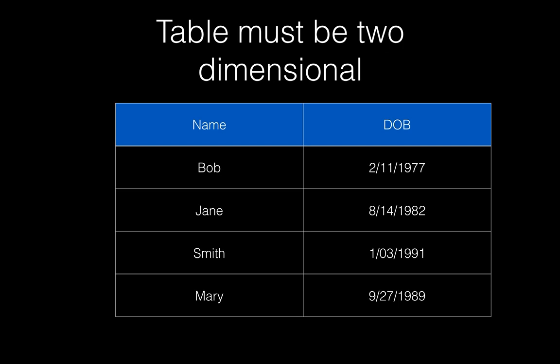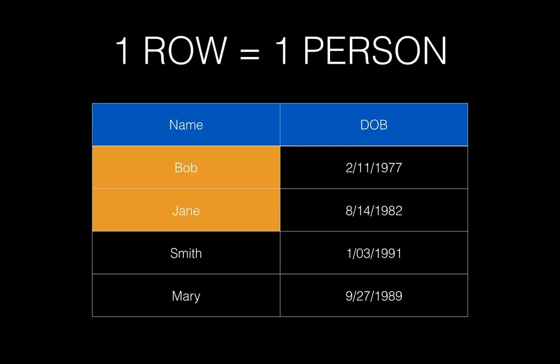There are a few simple rules to follow in order to get to the first normal form. First, the table must be two-dimensional: columns and rows. Each row contains data about one thing, or one part of a thing, meaning that from one row I should only get information about Bob, and not both Bob and Jane.